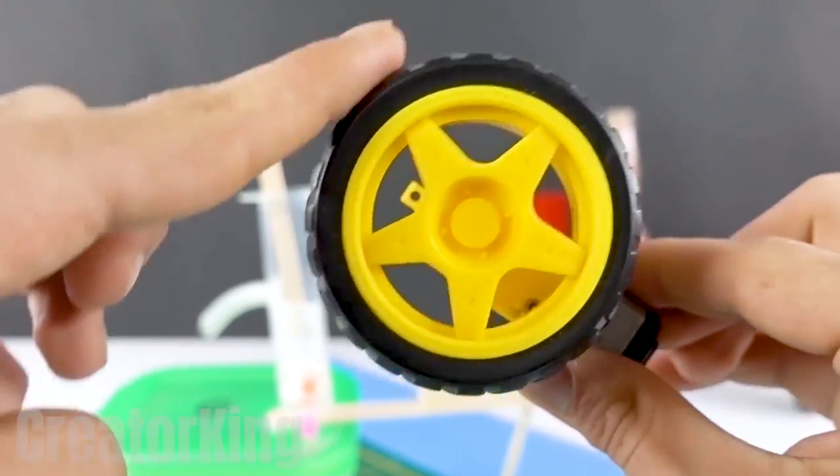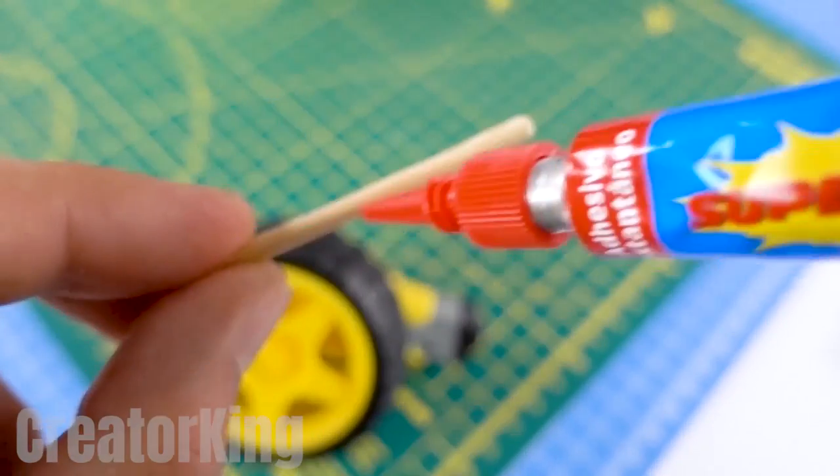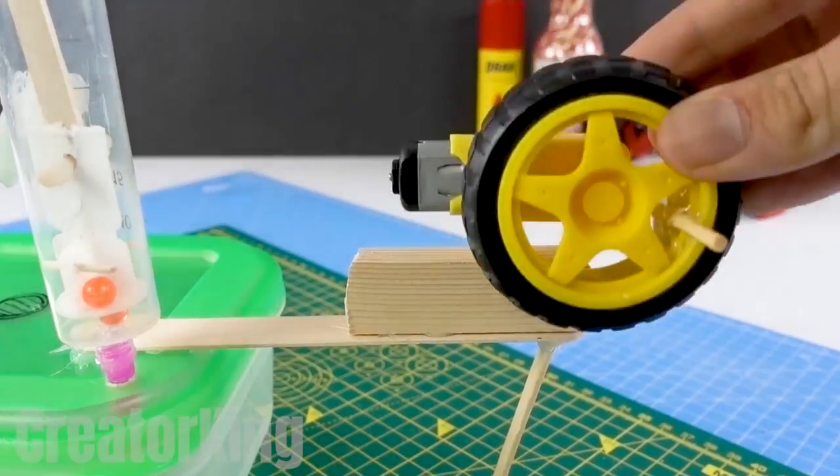Now you'll need a wheel with a motor included and a thin wooden stick which will glue through one of the holes in the wheels. The whole motor with the wheel will be glued to the piece of wood.